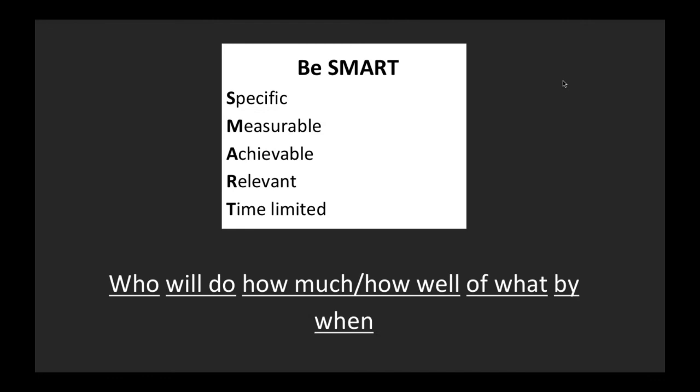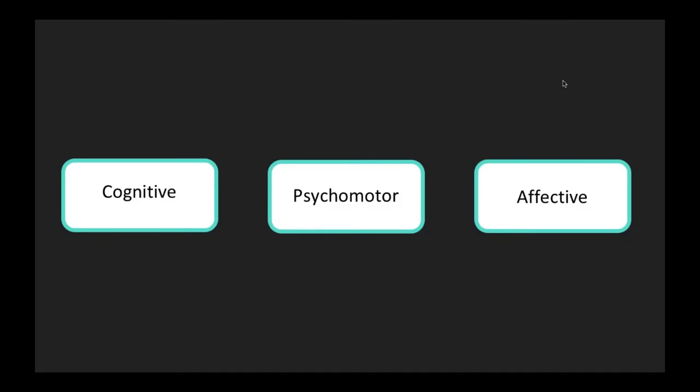You also need to think about what cognitive domains you're targeting. Objectives can fit into different domains, three of which are cognitive, psychomotor, and affective. The cognitive domain is factual knowledge and problem solving. Affective is attitudes, values, and beliefs. Psychomotor is skills or behavioral objectives. Depending on your overarching goal, you may need to write objectives in any combination of these. Say you're teaching a procedure - you may need your learners to name the indications, a cognitive goal; successfully demonstrate that procedure, a psychomotor skill; and value the patient's privacy and comfort, an affective domain.